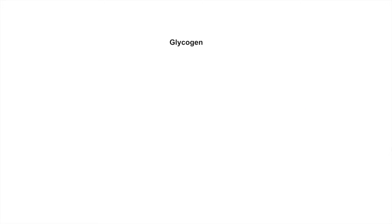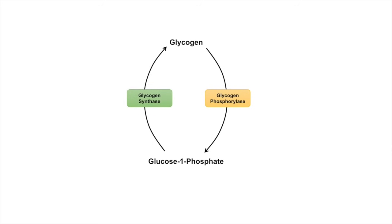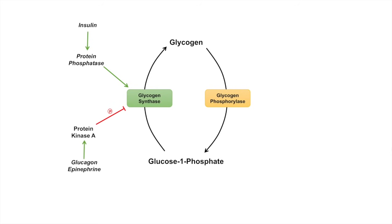Glycogen can be processed back into glucose-1-phosphate by glycogen phosphorylase, and glucose-1-phosphate can be used to produce glycogen with the help of glycogen synthase. Insulin is an activator of glycogen synthase through a protein phosphatase. Glucagon and epinephrine will actually inhibit glycogen synthase through protein kinase A via a phosphorylation mechanism, so they lead to the phosphorylation and inhibition of glycogen synthase. AMPK can also inhibit glycogen synthase through phosphorylation as well.